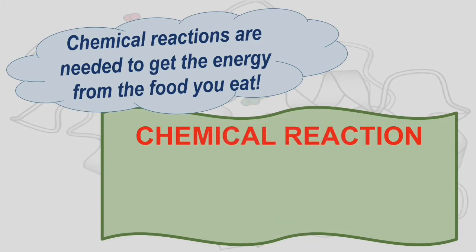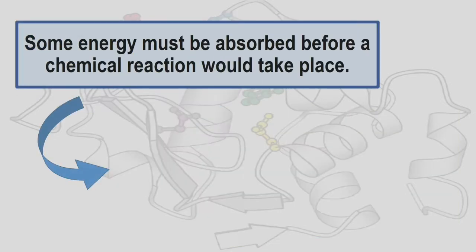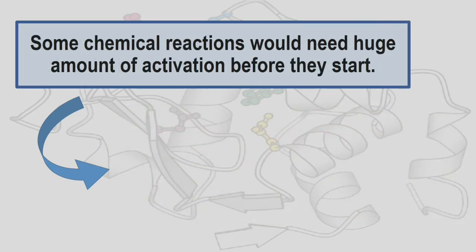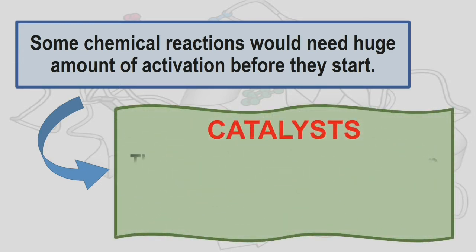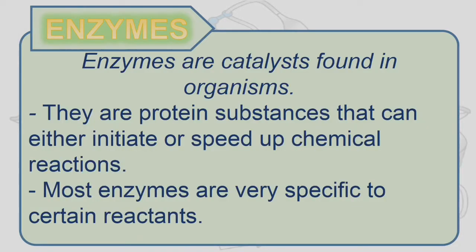What is a chemical reaction? A chemical reaction is the process wherein atoms or groups of atoms are grouped and restructured to form different substances. Some energy must be absorbed before a chemical reaction would take place. Activation energy is the amount of energy needed for a chemical reaction to start. Some chemical reactions require a huge amount of activation energy before they start. Catalysts are substances that speed up chemical reactions by lowering the activation energy.